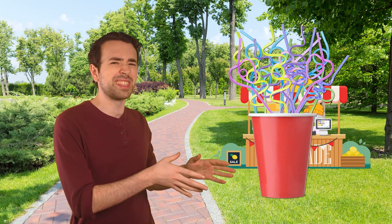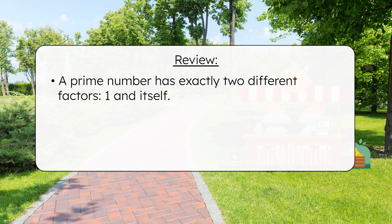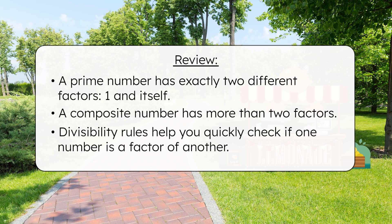So what did we learn today besides the fact that we'll just keep this group of 17 silly straws in one container? Now you know that a prime number has exactly two different factors, one and itself, while a composite number has more than two factors. Divisibility rules help you quickly check if one number is a factor of another to determine whether a number is prime or composite. Be sure to complete the practice questions and extension activities that go with this lesson to practice working with prime and composite numbers. This lemonade stand is ready for business. We'll check in on Ren and Mia's sales in our next lesson. Remember, mathematicians, in math, as in life, every effort adds to your success. I'll see you next time!